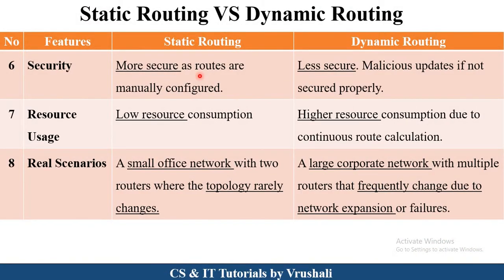Static routing is more secure because the network administrator manually configures the path. Dynamic routing is less secure because different protocols identify a particular path based on distance or traffic. Static routing has low resource consumption — it requires low memory and low processing — but dynamic routing requires higher resource consumption.